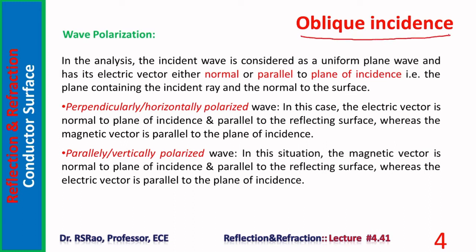Moving to oblique incidence, two situations are considered: one where the electric vector is normal to the plane of incidence, and one where it is parallel. The plane of incidence is the plane containing the incident ray and the normal to the surface. When E is normal to the plane of incidence, it is called a perpendicularly polarized or horizontally polarized wave. When E is parallel to the plane of incidence, it is called a parallelly polarized or vertically polarized wave.